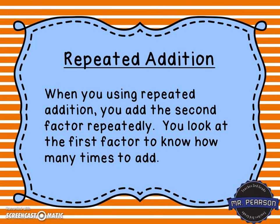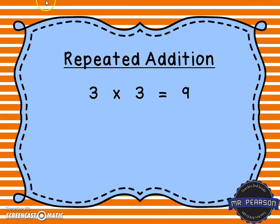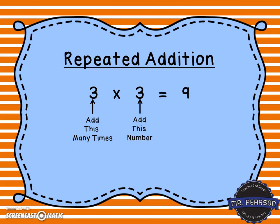The third strategy is repeated addition. When using repeated addition, you add the second factor repeatedly, and you look at the first factor to know how many times to add it. Here we have 3 times 3 equals 9, so we take the second factor — the 3 — and add it three times: 3 plus 3 plus 3 equals 9.